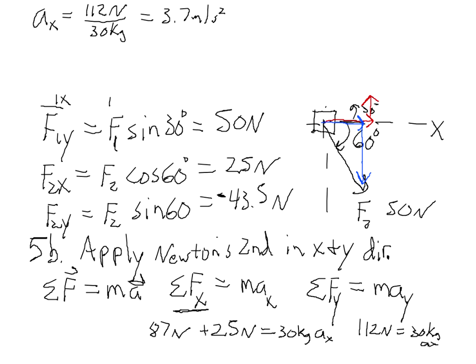How about the Y component? Well, now we use Newton's second law in the Y direction. All the forces that are in your free body diagram, you put their Y components all on the left side of this equation. So, F1Y is a positive 50 Newtons and F2Y is a negative 43.5 Newtons. Those are all of the forces that have a Y component. The right side is equal to the mass of the cart, 30 kilograms, times the acceleration of the cart in the Y direction, AY.